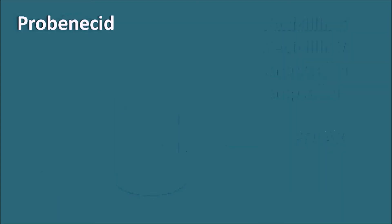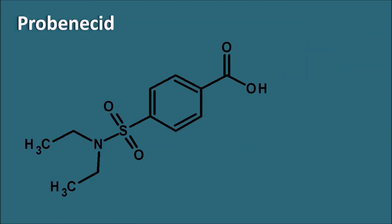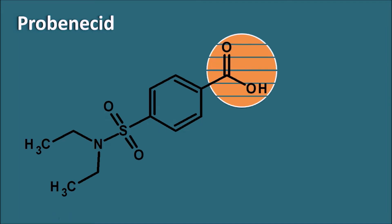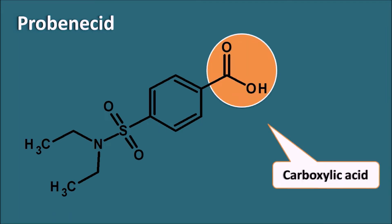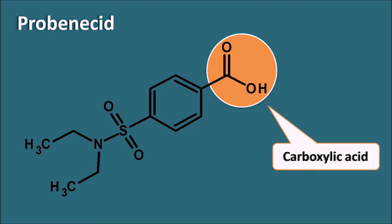Now let us look at Probenecid. Probenecid has a structure that also contains a carboxylic acid group, just like the penicillins. In addition to this carboxylic acid group, it also has a sulfonamide moiety attached to the benzene ring. So Probenecid is a benzene sulfonamide derivative.